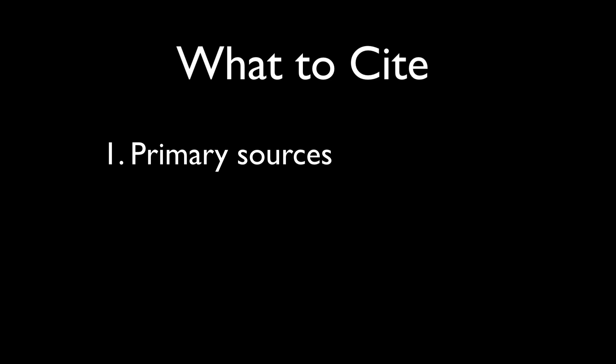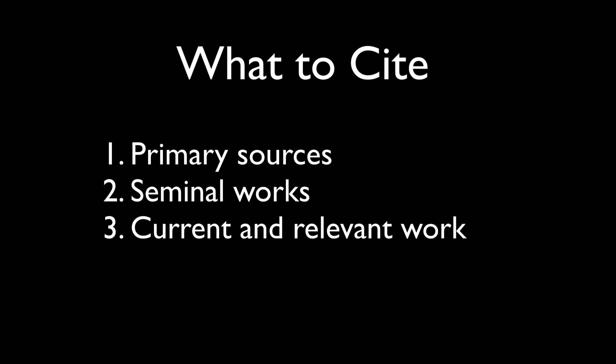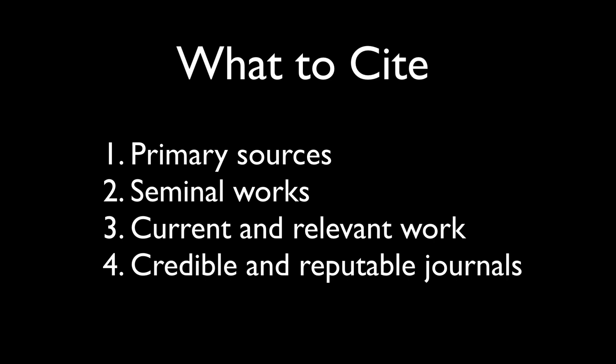What to cite. Prioritize citing original research articles over review papers or summaries. Reference key papers that have significantly influenced your field. Use the most recent research, especially in rapidly evolving fields. But relevant older research may also need to be cited, for example, to provide historical context. Rely on well-regarded journals to ensure your citations are credible.